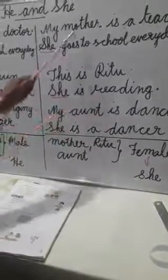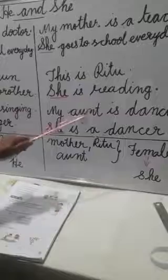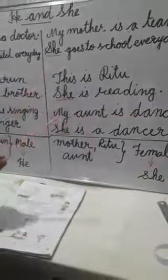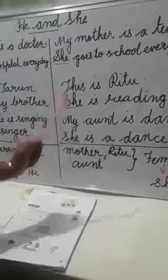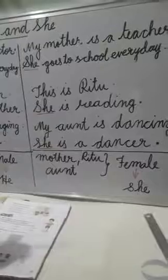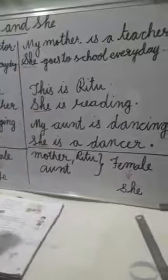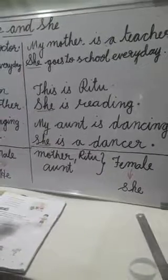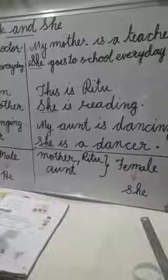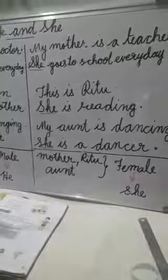So Mother, Ritu, and Aunt are naming words. And 'she' is called a pronoun — the word which we use in place of a naming word is called a pronoun.